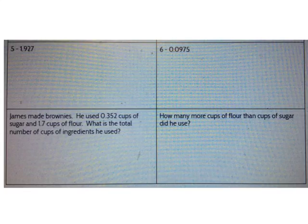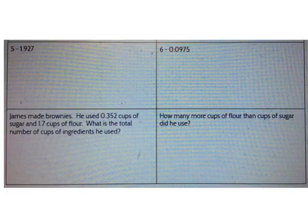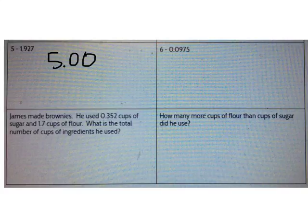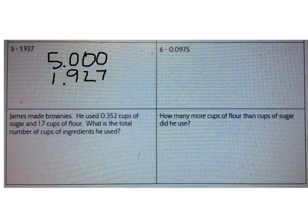We also talked about subtracting decimals. The most important thing when subtracting decimals is still lining up the decimal point. 5 is a whole number — where should the decimal be placed in the number 5? Remember that the decimal always goes after the ones place. So I can write 5 and 0 thousandths minus 1 and 927 thousandths. Now I can subtract.